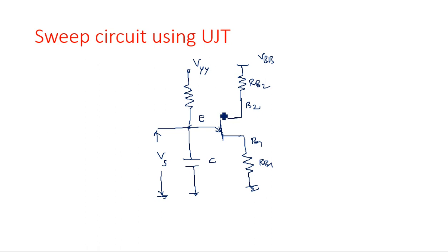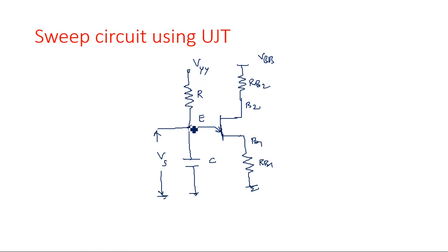This is the circuit diagram of the UJT relaxation oscillator or sweep circuit. The symbolic representation shows two resistors from base 2 to VBB and base 1 to ground. From the emitter, resistor R connects to VYY at the output terminal, and from the emitter to ground we have the capacitor.